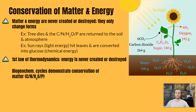Biogeochemical cycles — the water cycle, carbon cycle, nitrogen and phosphorus cycles — all demonstrate the conservation of matter. When an animal dies, the nitrogen in its body is never destroyed; it's just transformed. It goes through ammonification, returns to the soil as ammonia, and then can be used for plant growth in the future.